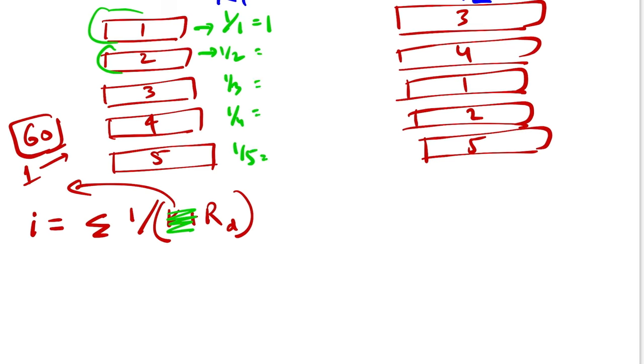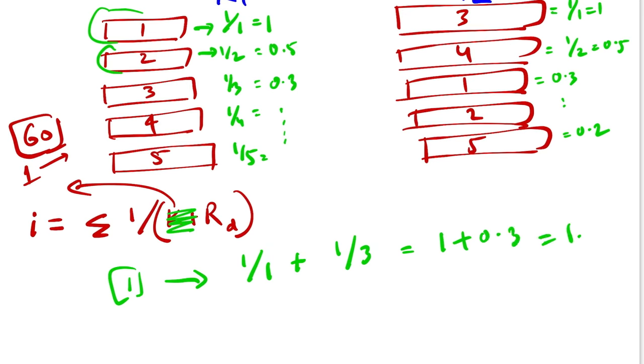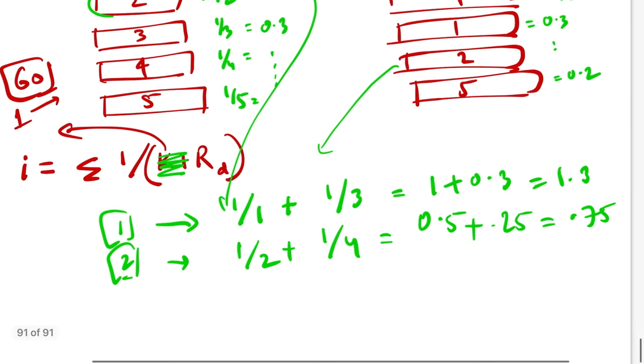Similarly you calculate it for the set K2. Here for document 3 it is 1/1 which is 1, for 4 it's 1/2 which is 0.5, here you have 0.33, and at last you have 0.2. Now the final ranking for every document: for document 1 it would be 1/1 plus 1/3, which is 1 plus 0.33 which is 1.33. For document 2 this gives us 1/2 plus 1/4, which is 0.5 plus 0.25 that comes out to be 0.75.